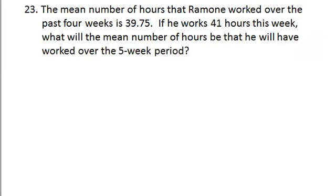We know from the information given that the average number of hours that Ramon worked for the first four weeks is 39.75. We don't know exactly how many hours he worked each week, but we want to incorporate that information into a five-week average because when he works this week, this last week, the fifth week, it will be 41 hours, and we want to average all five of those weeks.